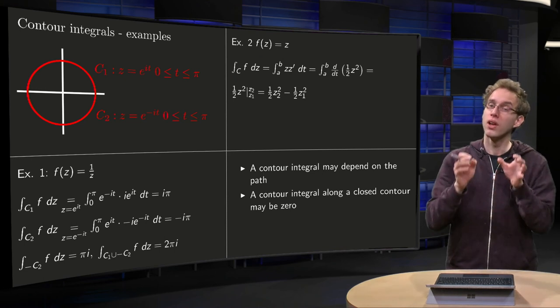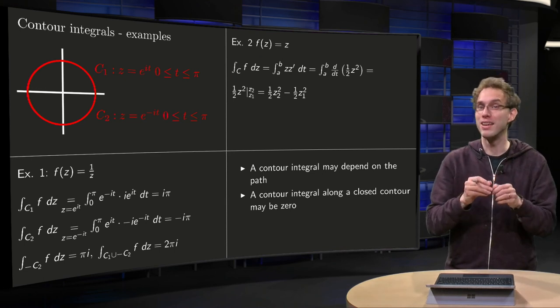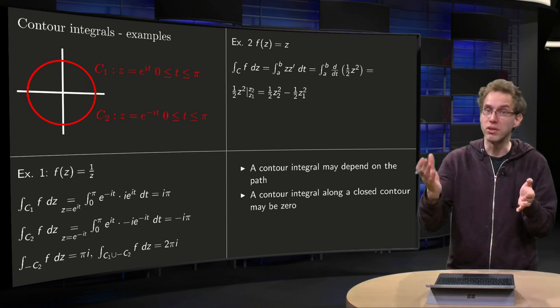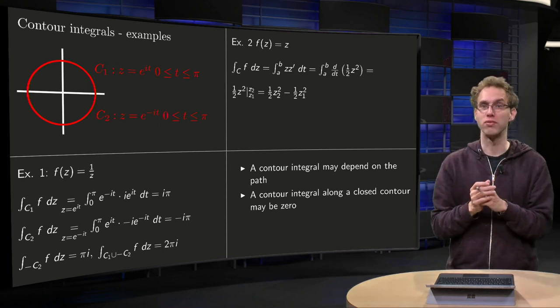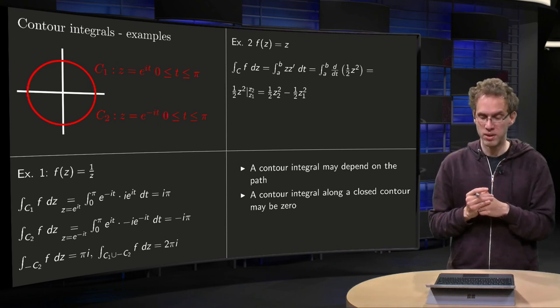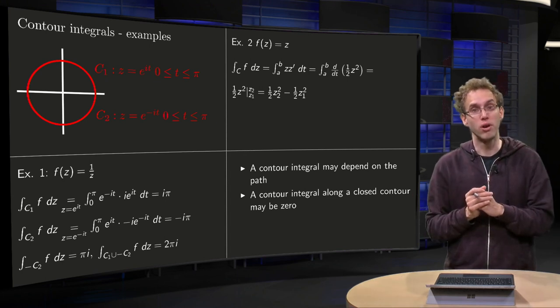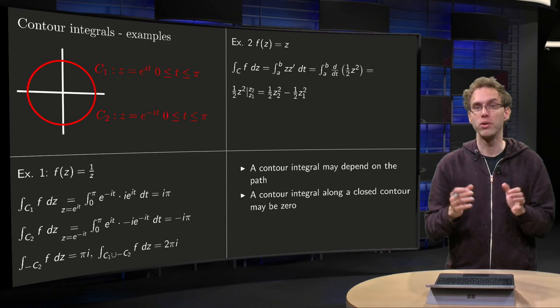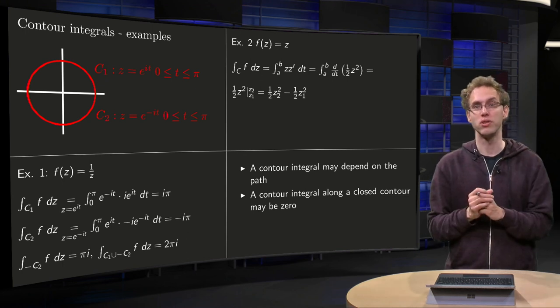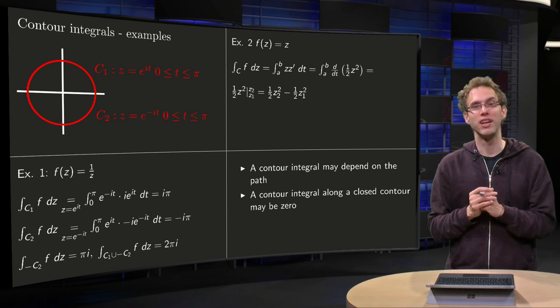To summarize, a contour integral may depend on the path, or may not depend on the path, that depends on the function. Similarly, a contour integral along a closed curve may be 0, or may not be 0, and that also depends on the function, so you have to be a bit careful with that.